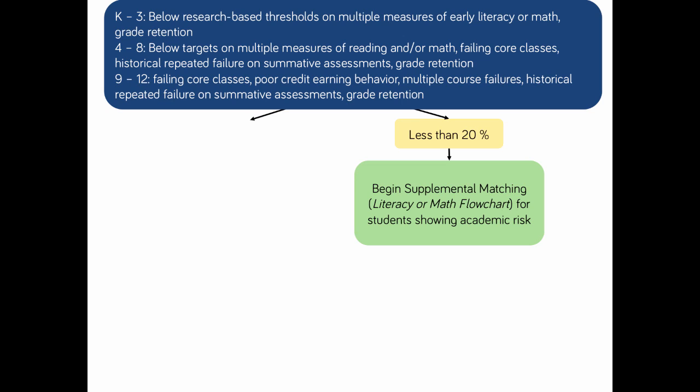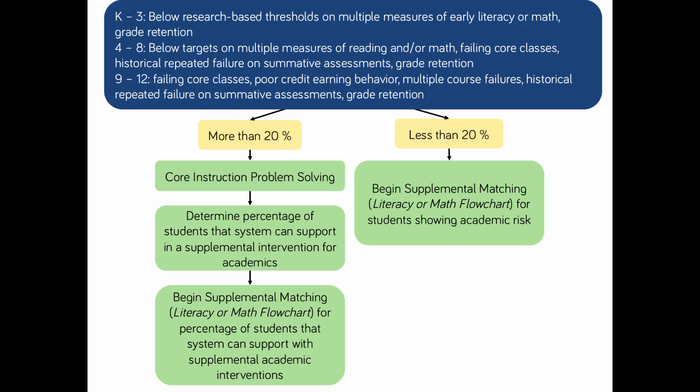If the percentage of students demonstrating academic risk is more than 20%, it is recommended to engage in core problem solving before determining the percentage of students a supplemental intervention system can support. Your NC MTSS team has provided an intervention resource planning tool in Modules 2.1 and 2.2 to assist teams in determining the resources needed to support supplemental and intensive interventions. In this scenario, the school will be intervening at the core level with academic strategies as well as supplemental interventions.